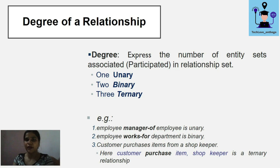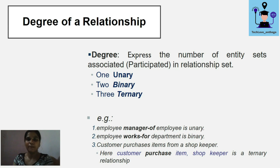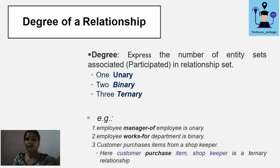Another example is 'employee works for department,' which is a binary relationship. Here two entities — employee and department — are participating. Employees are working for the department, so two entity sets are participating, making this a binary relationship.